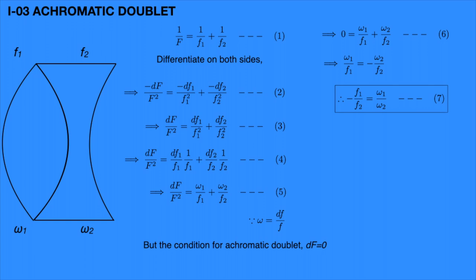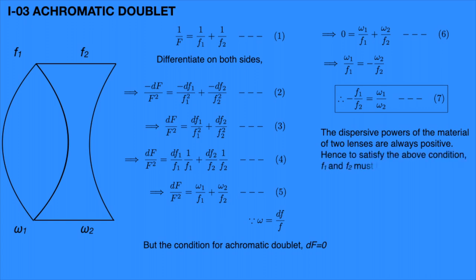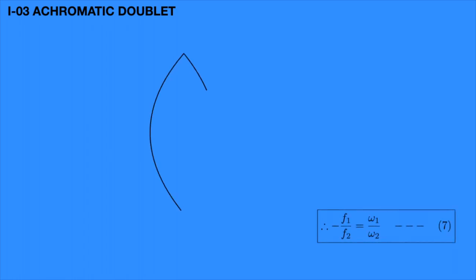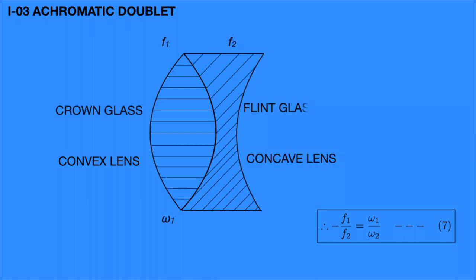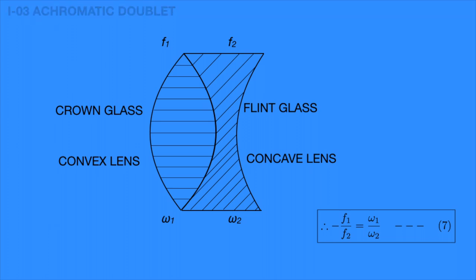Equation 7 is called the condition for the achromatic doublet — the ratio of the two focal lengths equals the ratio of their dispersive powers. The minus sign indicates one must be a convex lens and the other a concave lens. When a convex lens is made with crown glass and a concave lens with flint glass, and both are in contact, the system minimizes chromatic aberration. This combination is known as an achromatic doublet.